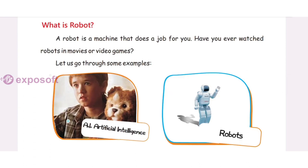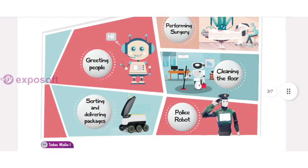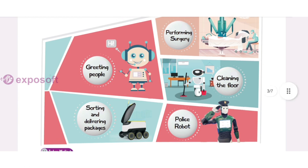What is a Robot? A robot is a machine that does a job for you. Have you ever watched robots in movies or video games? A robot can greet people, perform surgery, clean the floor, act as police robots, and sort and deliver packages. A lot of work robots can do.